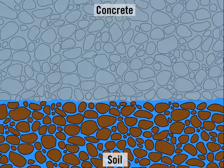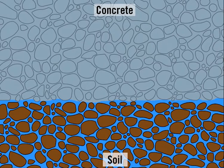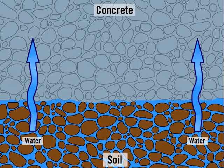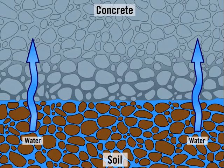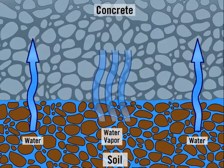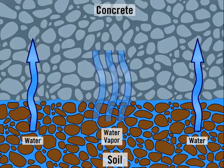In housing foundations, the concrete material used as the base of a house is also porous. This potentially creates a problem as it sits on moist ground. If measures aren't taken, ground water will seep up from the ground into the concrete. But liquid water isn't the only problem — water vapor also rises and will seep into the concrete.